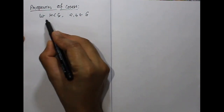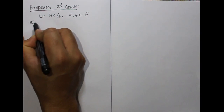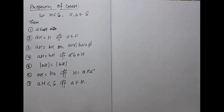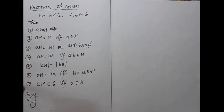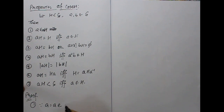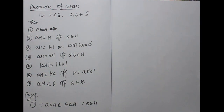Properties of cosets. Let H be a subgroup of G and a, b belong to G. These properties are very important and we will prove all of them. Property 1: a belongs to aH, since a can be written as ae, which always belongs to aH since e belongs to H, because aH contains elements of the form ah for all h in H.